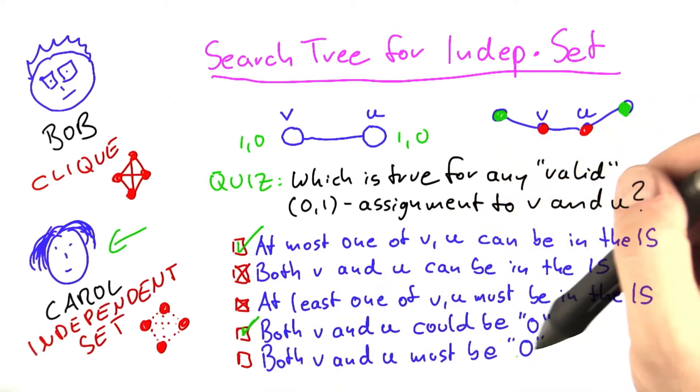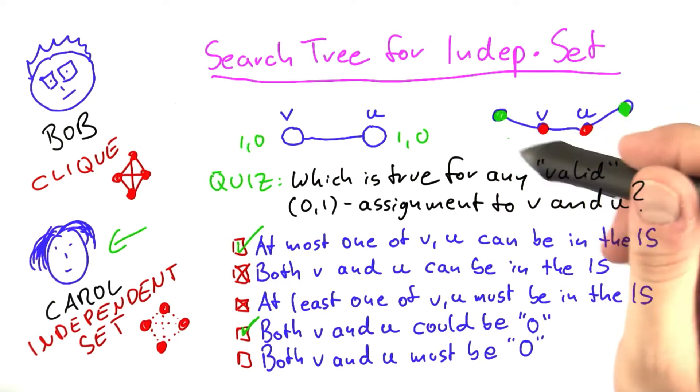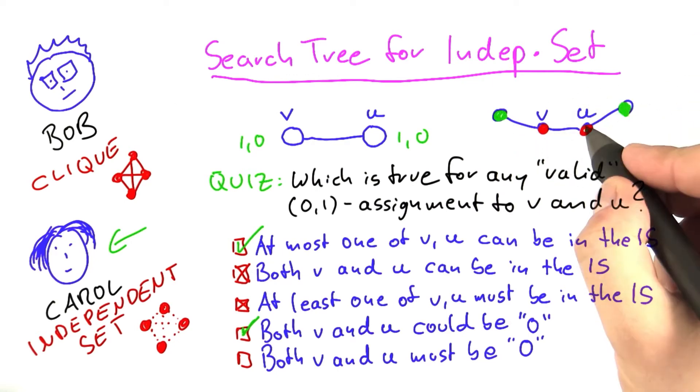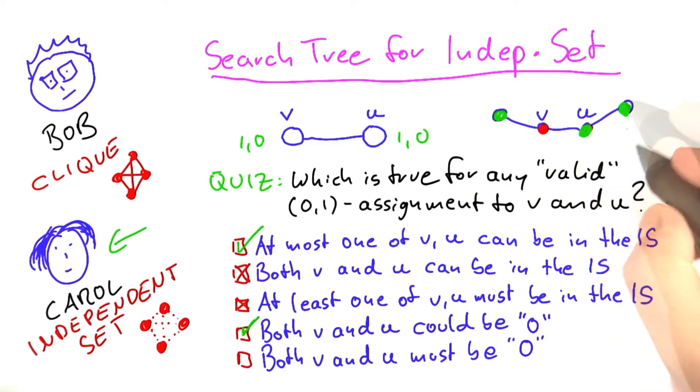Do we have to set both vertices to 0? No, this is also not the case because, for example, you could also have an independent set here that you construct in this way. You put u in and this one out. So now we have also found a maximum size independent set, but we have included one of the two vertices. So this one here is clearly also not true.